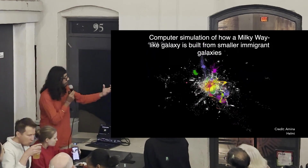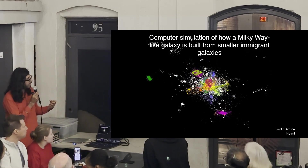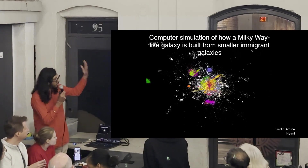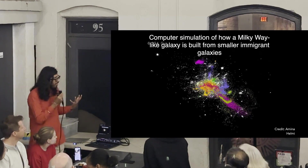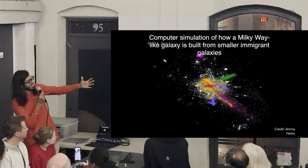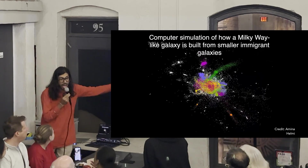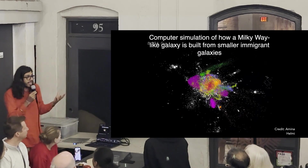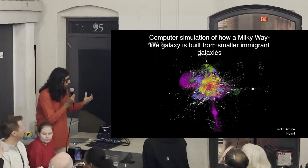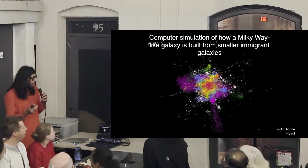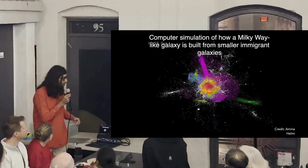This is how our galaxy was made, according to our best models and best computer programs. Every single color here represents a distinct family of stars that came in together, and these stars were then distributed all across the length and breadth of our galaxy, and they are now resettled everywhere. Just by looking at these stars, if I had not colored them for you, there's no way you'd be able to tell they were from a different origin or a different place. Today they all come together and they all are the Milky Way.